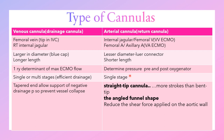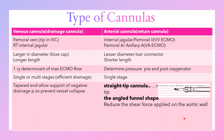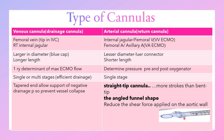The arterial cannula is single-stage. The tip of the cannula may be a straight tip, which causes more turbulent flow, or an angle-funnel shaped tip. The funnel shape is important to reduce the shear force applied on the aortic wall.